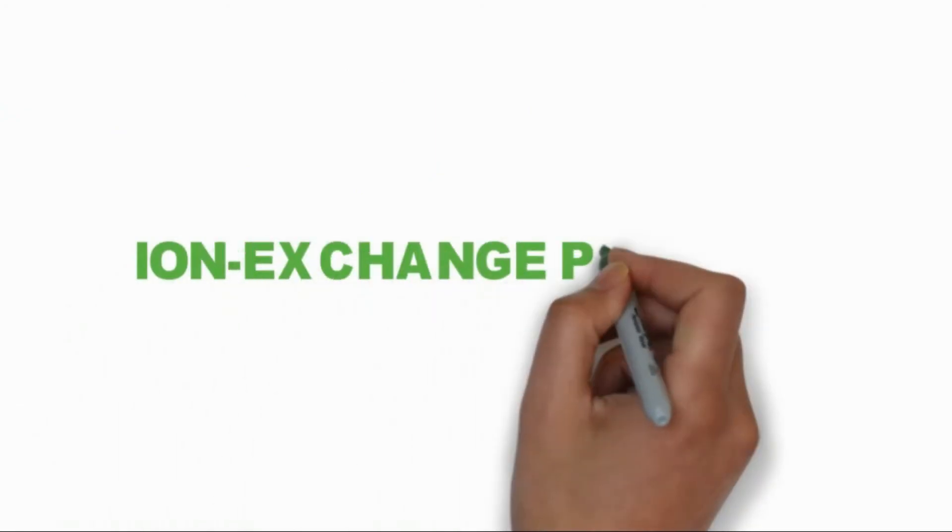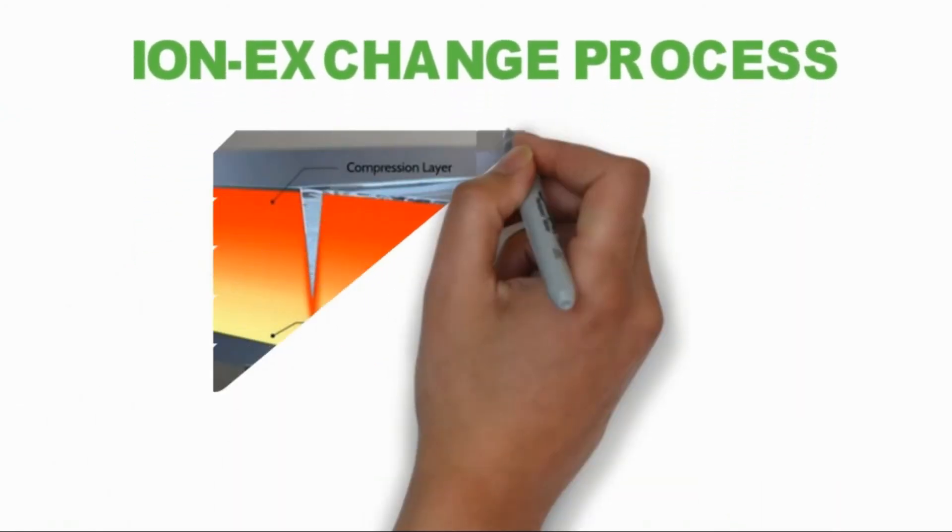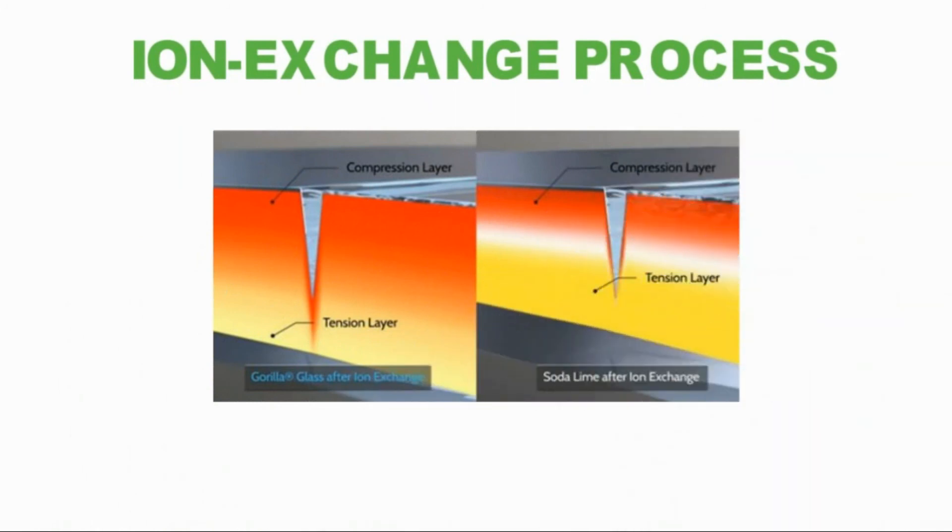Ion Exchange Process. Ion Exchange is a chemical strengthening process where large ions are stuffed into the glass surface, creating a state of compression. Gorilla Glass is specially designed to maximize this behavior.